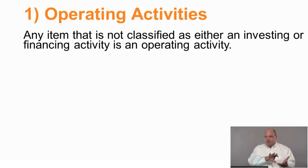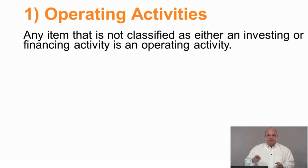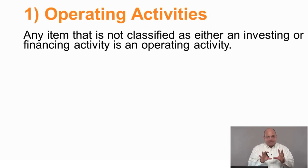Operating activities is the first category presented on the statement of cash flows, but in a sense you define it last — it includes every transaction that is not classified as investing or financing. You look at a transaction and ask: is this investing? No. Is this financing? No. Then it must be operating. As the name indicates, we're talking about operations: buying inventory, buying raw materials, converting them into finished goods, and selling them — what we pay to suppliers, employees, and for our factory, and what we receive from customers.